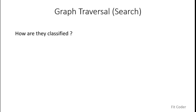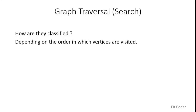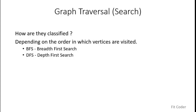The next question is: how are the different algorithms for graph traversals classified? Basically you have to search every node of the graph, so how can there be different mechanisms? Different mechanisms exist depending on the order in which vertices are visited. There are basically two types: BFS, which is breadth first search, and DFS, which is depth first search. In this video I'll cover BFS — its applications, algorithm, and implementation — and in the next video we'll discuss DFS.